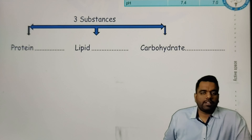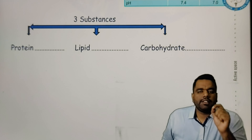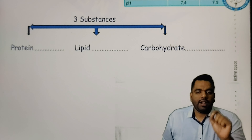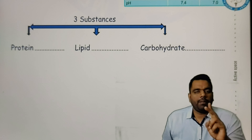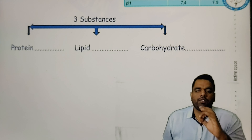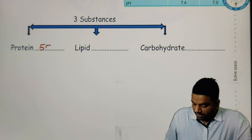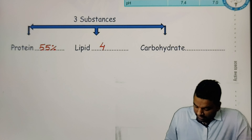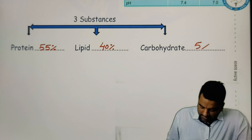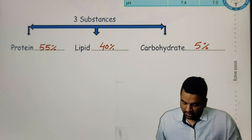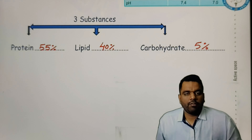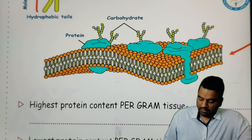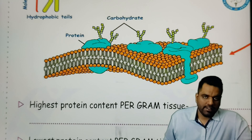The function of the cell membrane: it provides protection, selective permeability, absorption activity, gas exchange, and maintains the shape and size of the cell. Now the difference between the extracellular fluid and the intracellular fluid — later on I will let you know where the sodium is actually present and where the potassium is actually present. Now talking about the cell membrane, this cell membrane is part of the cell, so it is made by the cell.